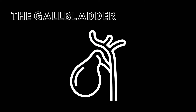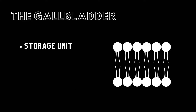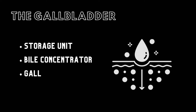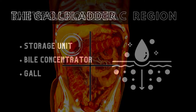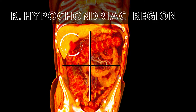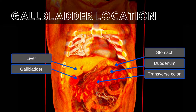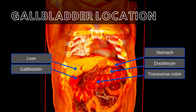The gallbladder plays a crucial role in the digestion and absorption of lipids. It functions as both a storage unit and a concentrator for bile, a dark green fluid produced by the liver. Bile, often referred to as gall, is vital for the breakdown and absorption of fats in the small intestine. Located within the right hypochondriac region of the abdomen, the gallbladder occupies a position between the right and left lobes of the liver. Its proximity to the duodenum and the transverse colon makes it an integral part of the digestive system.